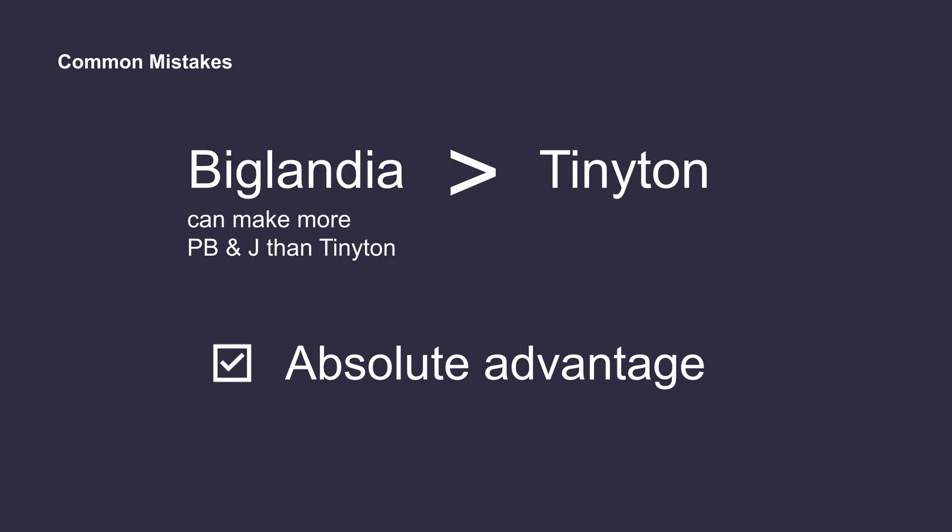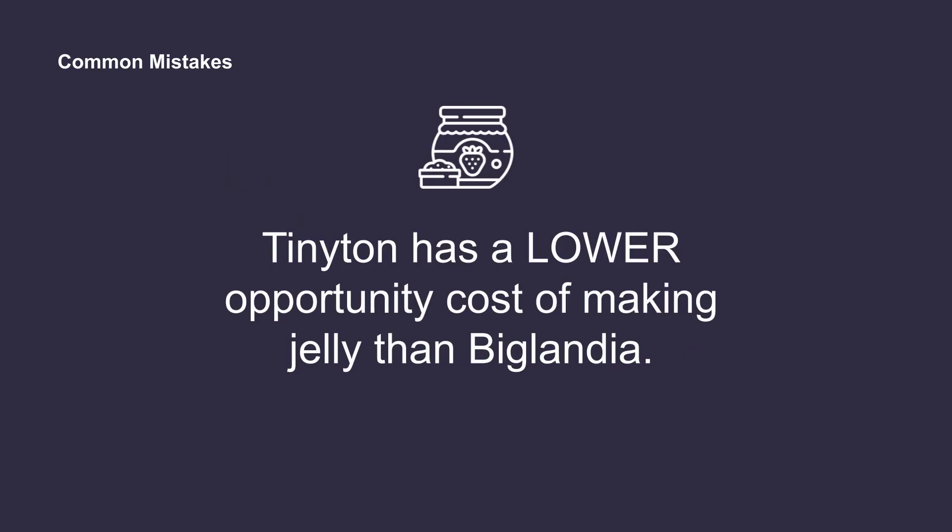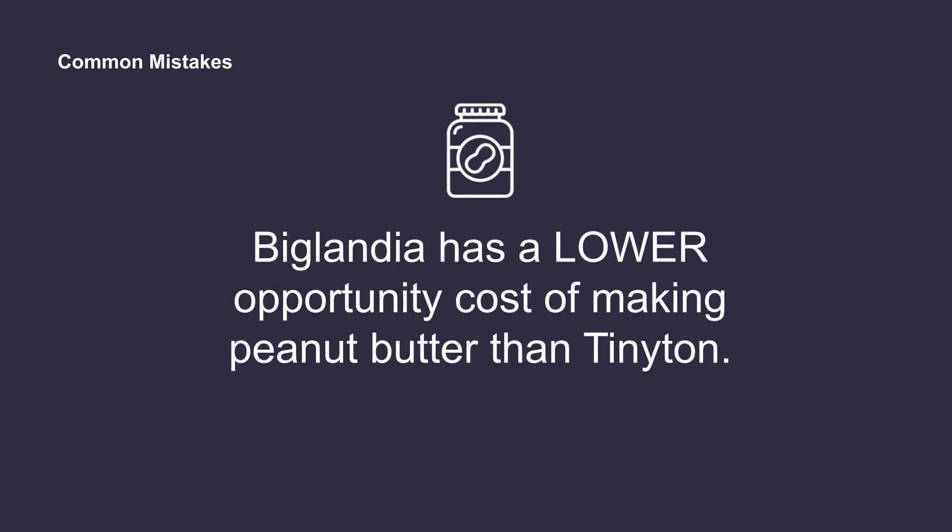Yet, Tinyton still has the comparative advantage of making jelly. How is this possible? This is because each day, Tinyton has a lower opportunity cost of making jelly than Biglandia. They only give up half a ton of peanut butter to make one ton of jelly. Meanwhile, Biglandia has to give up one ton of peanut butter to make one ton of jelly. Similarly, Biglandia has a lower opportunity cost of making peanut butter than Tinyton.